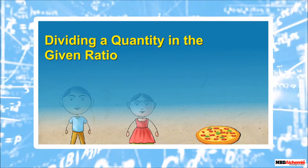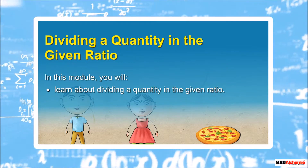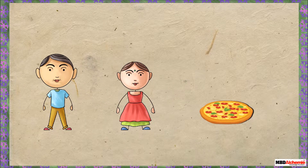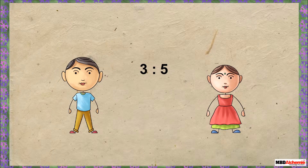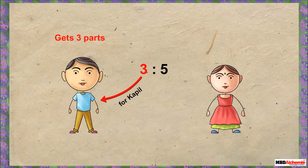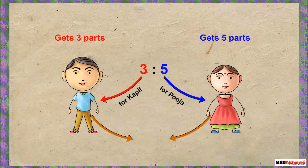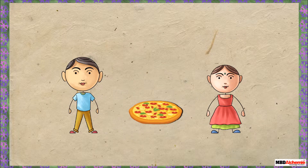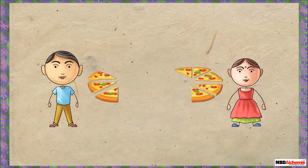In this module you will learn about dividing a quantity in the given ratio. Couple and Puja want to share a pizza in the ratio 3 to 5. Since there is no common divisor, 3 to 5 is already in its lowest form. If Couple gets three parts and Puja gets five parts, then to distribute it in the ratio 3 to 5, we need a total of eight parts.